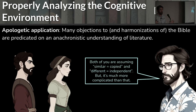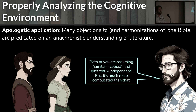The problem with both of these approaches is that they're both predicated on the same assumption: similar equals copied, and different equals unique, independent, and special — so Bible must be different equals special equals unique. It's starting with the a priori assumption that if the Bible is true, it can have no literary connection with anything else. But this is a frankly silly presupposition, because every single text written in any kind of group is invariably going to have connections to other texts around it.